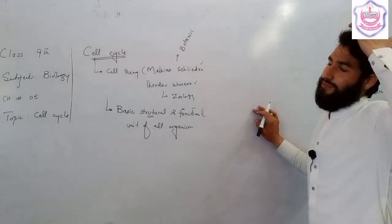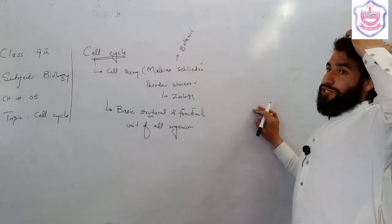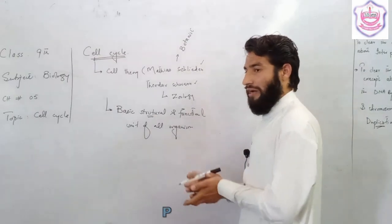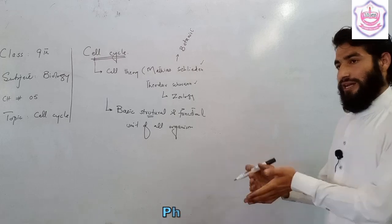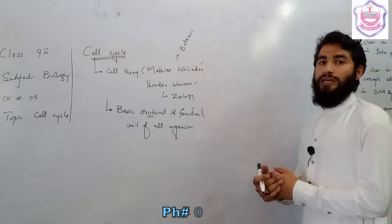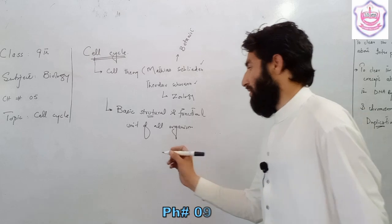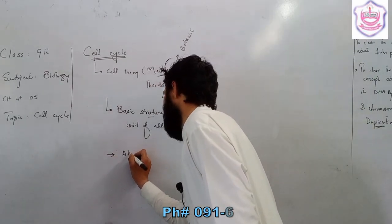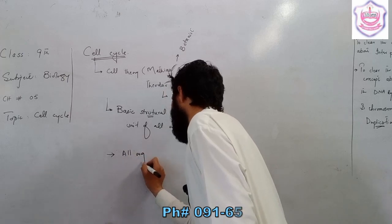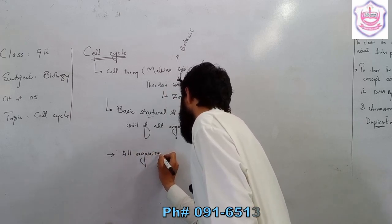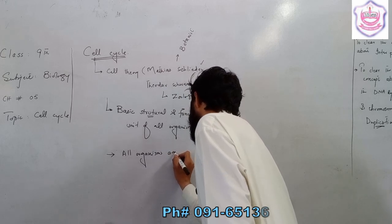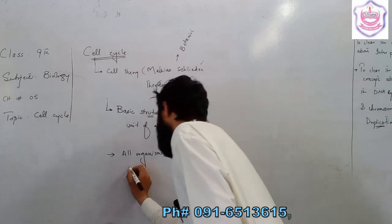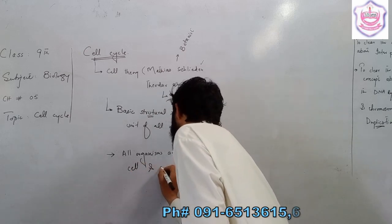If you have a respiratory system or a digestive system, then you have different organs. The organ is made of tissue, the tissue is made of cells. All organisms are made of cells and cellular tissue.